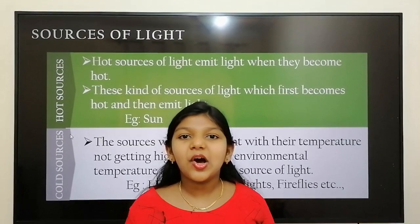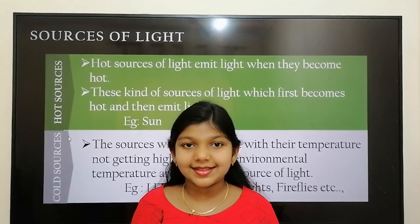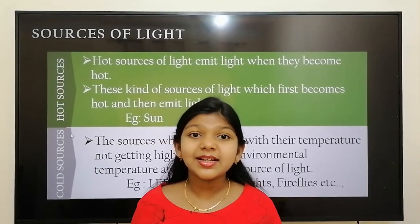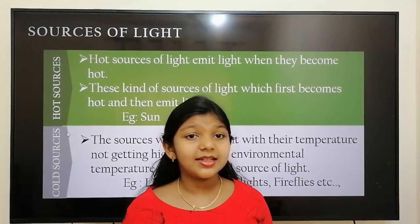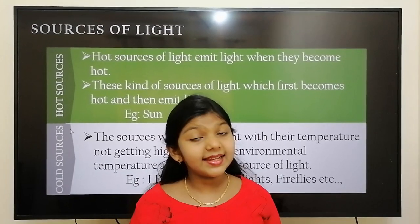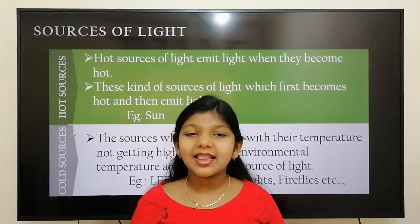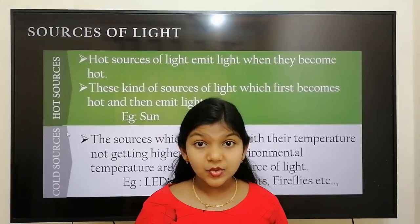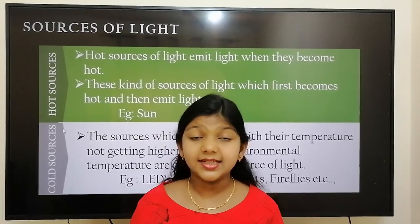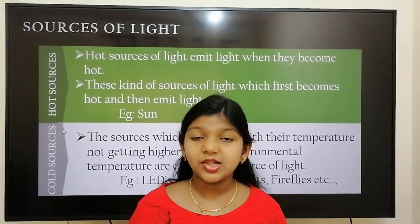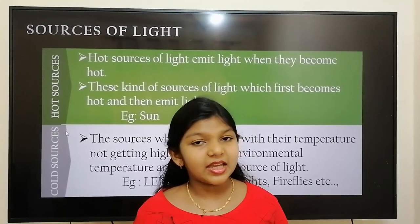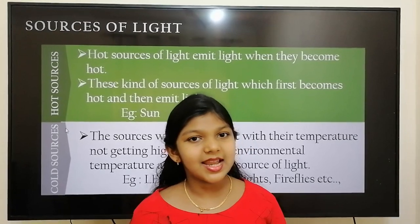Now let's see about hot and cold sources of light. Hot sources of light emit light when they become hot — they first become hot and then emit light. The sun is an example of a hot source. Sources that emit light without their temperature rising above the environmental temperature are known as cold sources of light. Examples include fireflies, LEDs, and fluorescent lamps.